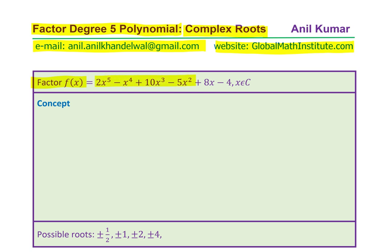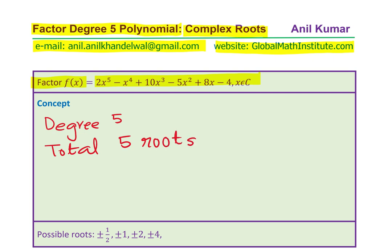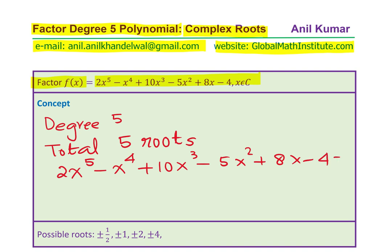We are given a degree 5 polynomial. Let's understand a strategy to factor it. The degree is 5, which means we have a total of 5 roots. Roots are the x-values that give zeros to the function. We are basically solving 2x⁵ - x⁴ + 10x³ - 5x² + 8x - 4 = 0. The solution of this equation gives you the roots.